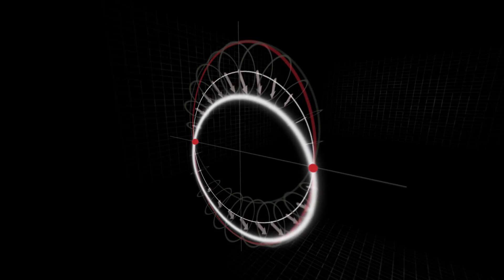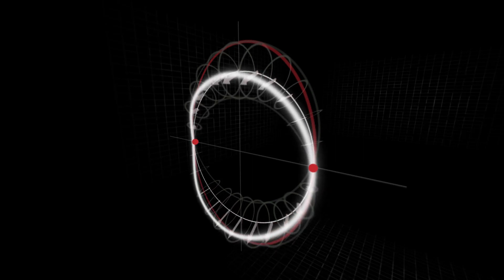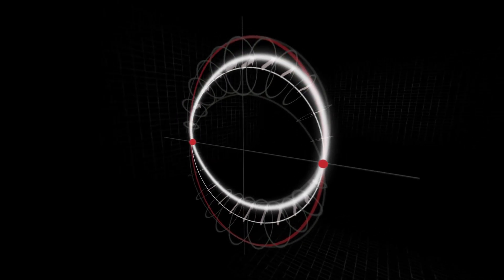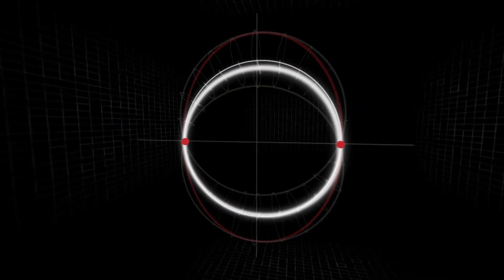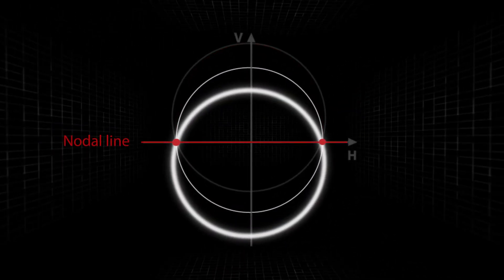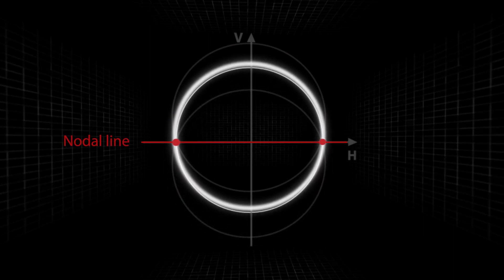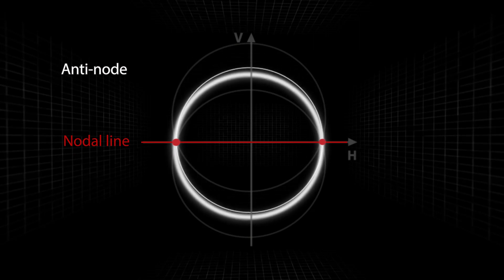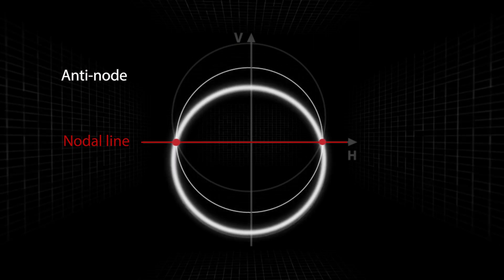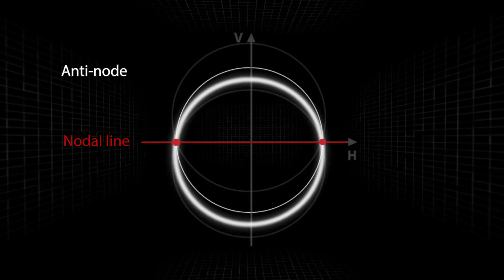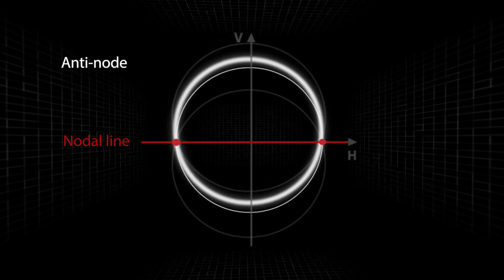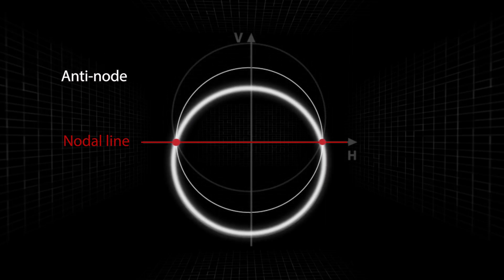This oscillation has a nodal line on the x-axis corresponding to horizontal polarization, and an antinode on the y-axis corresponding to vertical polarization. Thus, the amplitude for vertical polarization is maximal when measured in the y-axis and decreases to zero on the x-axis.